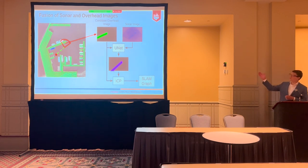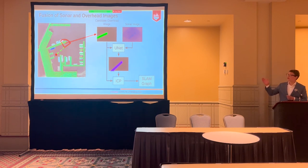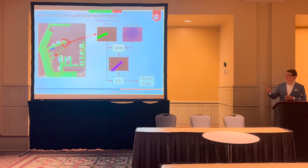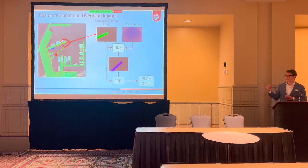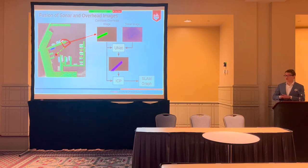Top left — green with black background — we have the candidate overhead image, which is just what we should see at our current state. We have a sonar image from the same time step. We take those and push them together into UNET. The output of UNET, shown here in magenta with black background, is the candidate overhead image transformed into the sonar image frame. We use that with the original candidate overhead image in ICP to find the transformation between those two, and then roll that into our SLAM graph.